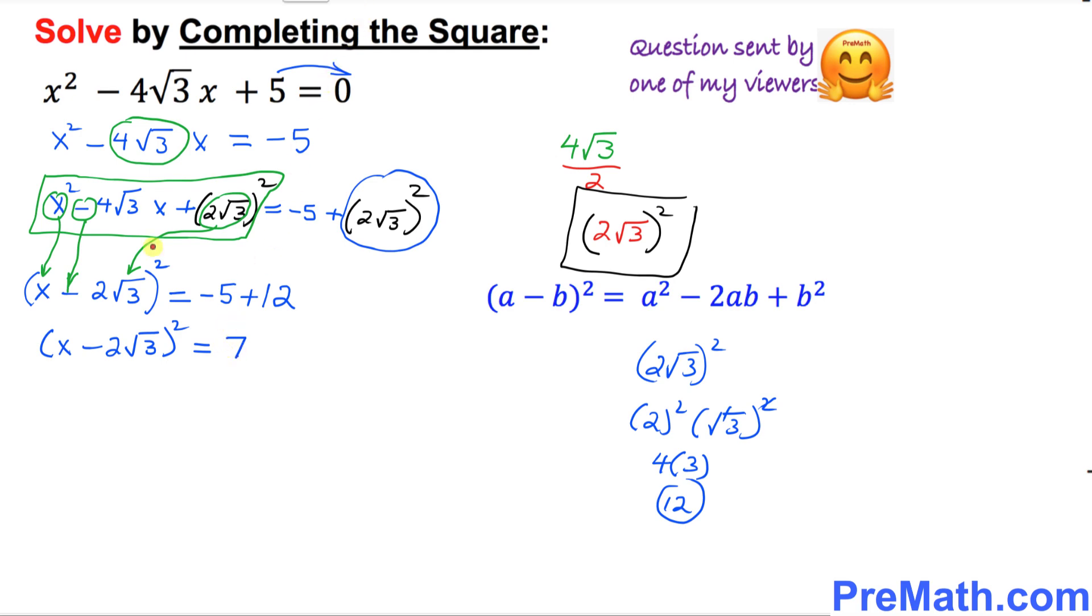Now let's take care of this one over here. Let's undo this square by taking the square root on both sides. The square and square root undo each other, they cancel out. We simply got x minus 2 square root of 3 equal to positive or negative square root of 7. So far so good. Make sure you put down the positive and negative sign.